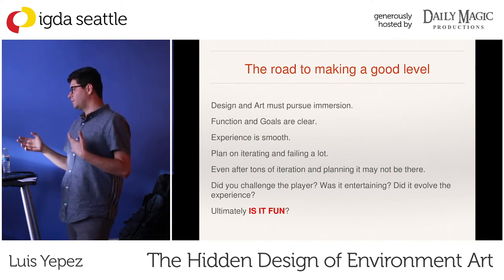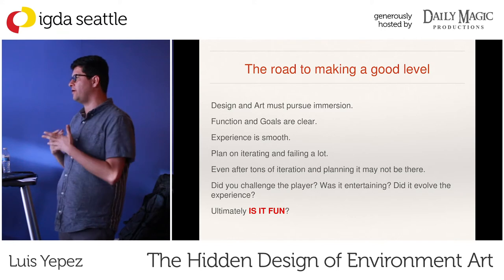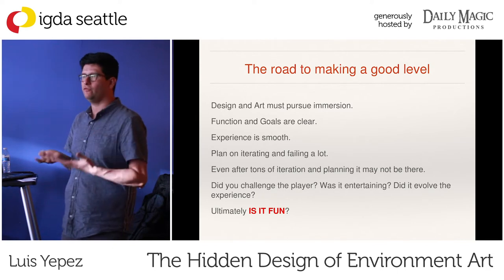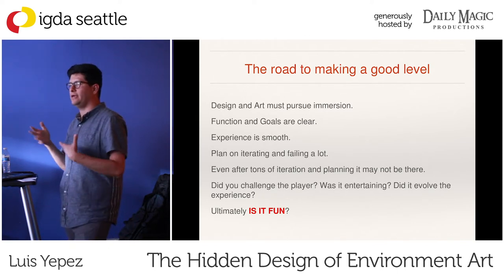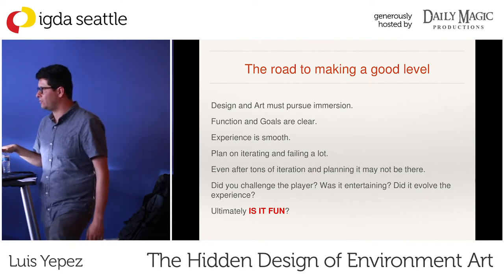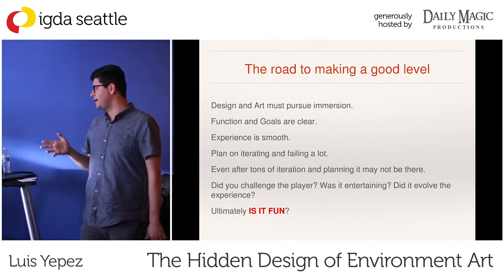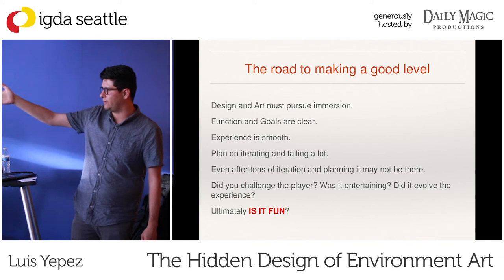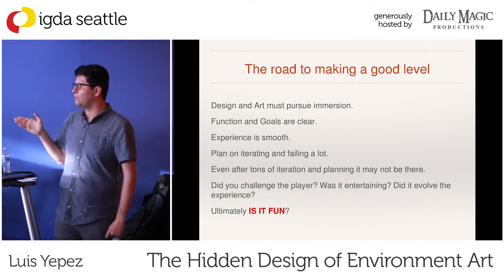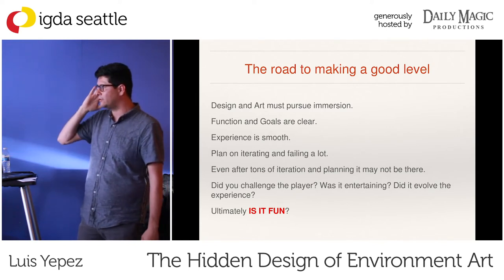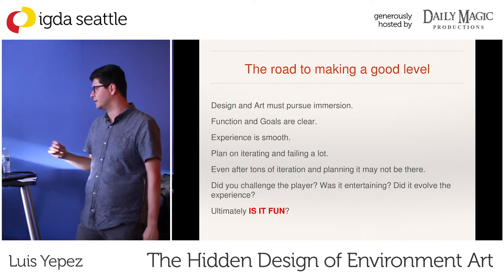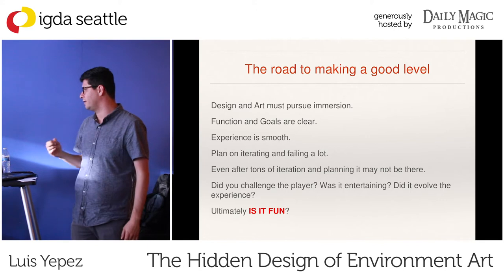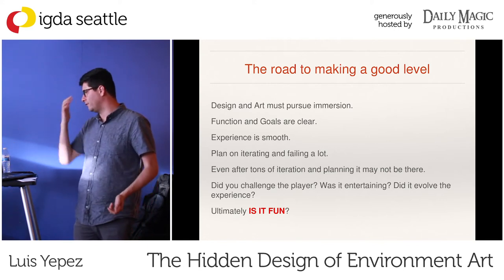We had a project at Fifth Cell where we were timing how long it took to make a level. The first level took about six or seven months with a team of four artists and two level designers. By the time we got to the last level, it took about a week — a very similar size level. You just start learning what works and what doesn't. Don't be afraid to fail, but plan on it. Stay in that proxy color-coding phase as long as possible while combat designers and system designers are still dialing things in.